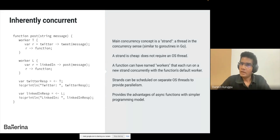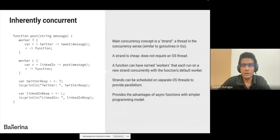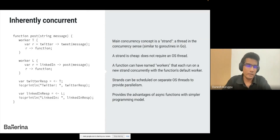The other important part is concurrency. In Ballerina, the main concurrency concept is strands. Strands are lightweight and cheap — similar to goroutines in Golang. Within a function, you can group sets of code into a worker construct that runs on a new strand concurrently. For example, you can have two workers — T and L — running in parallel, and then assign their output back to the main thread. This kind of asynchronous function can be simply written using Ballerina.